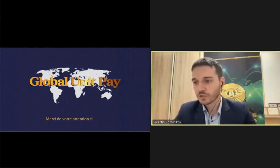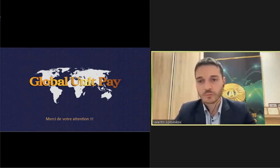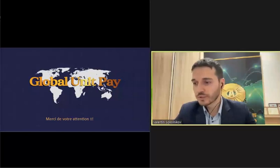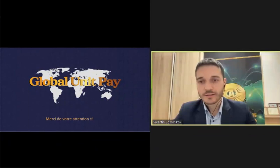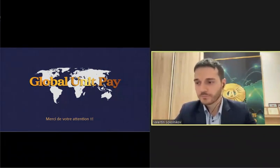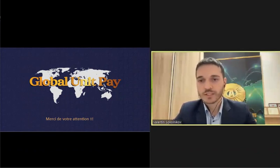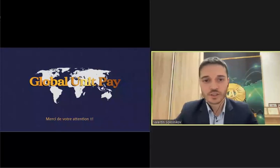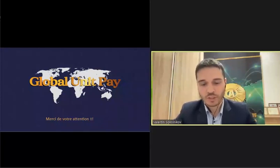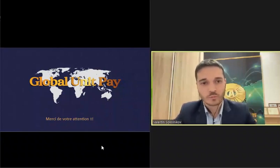Dans Coinbase, on peut avoir la crypto et faire l'échange contre l'argent fiduciaire. Il y a des fonctionnalités qui ne sont pas accessibles là et nous, nous les avons. Nous l'avons dit ouvertement. Certaines options que nous avons dans Global Unipay, c'est dix fois mieux que certaines plateformes. Peut-être que ce n'est pas connu de tout le monde. Peut-être que nous n'avons pas un spectre de banques ou de cryptos comme les autres bourses ont.